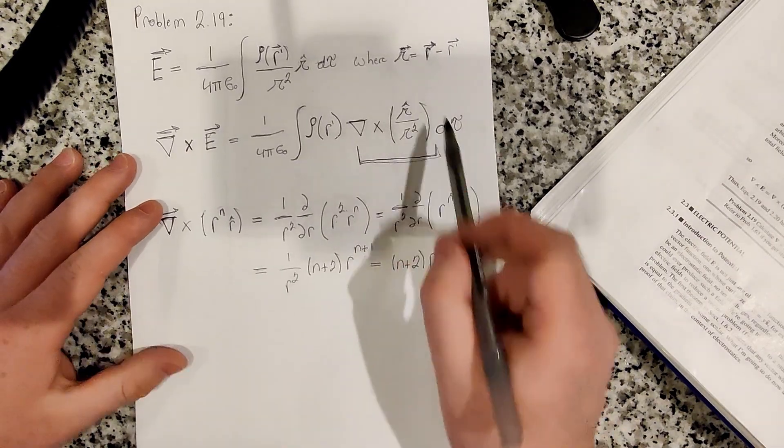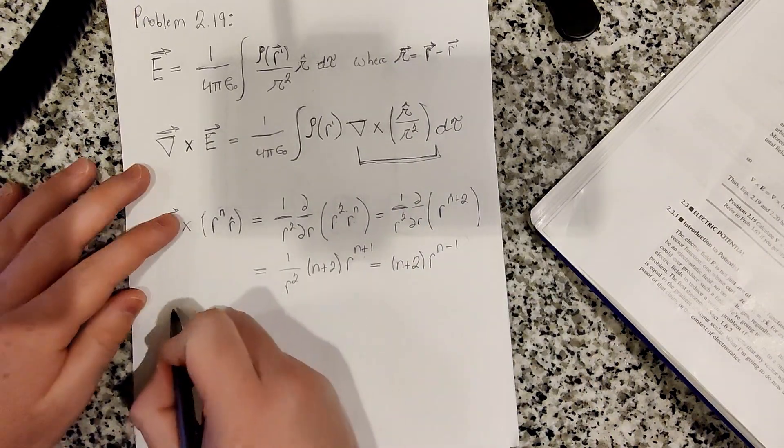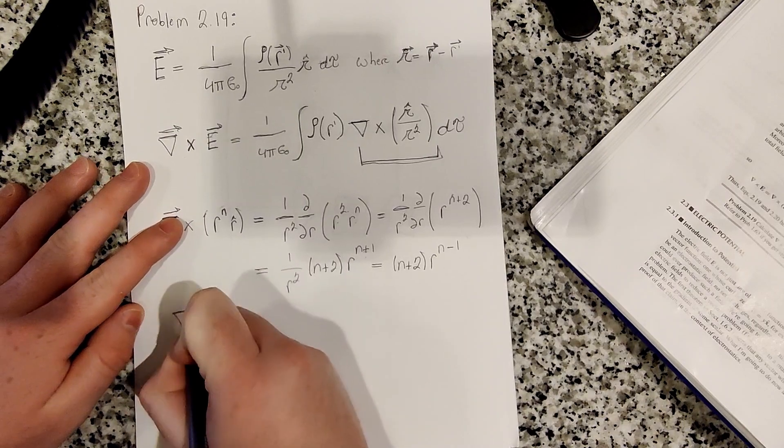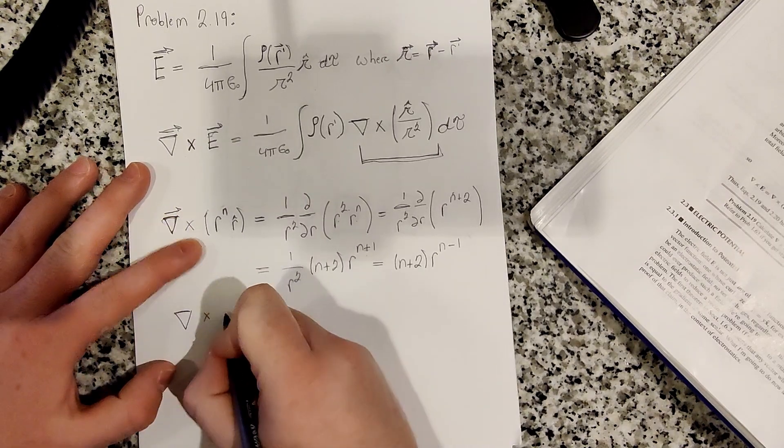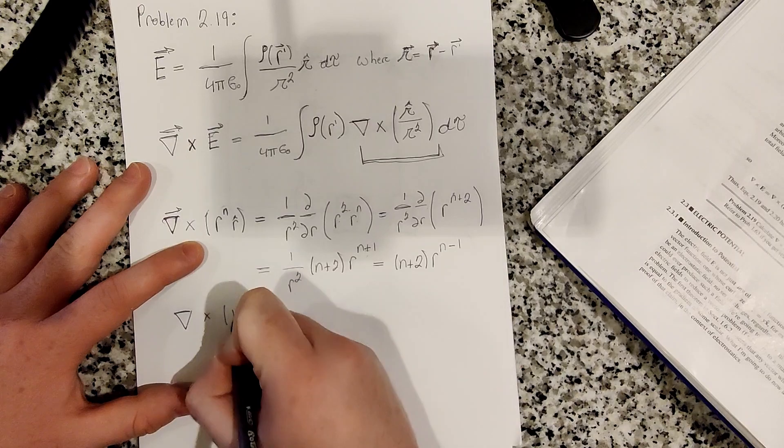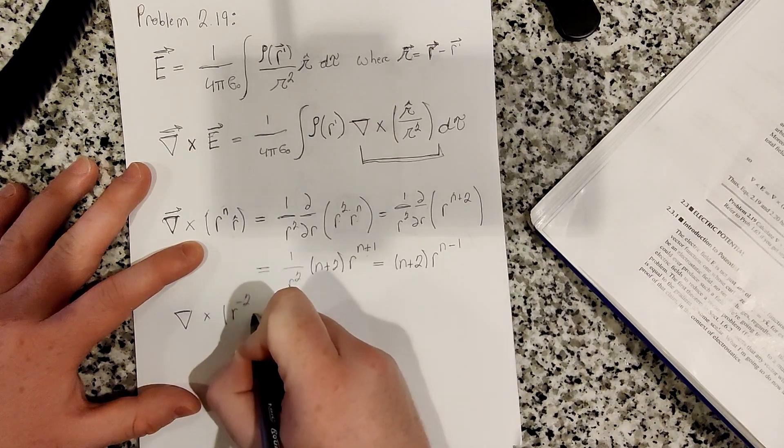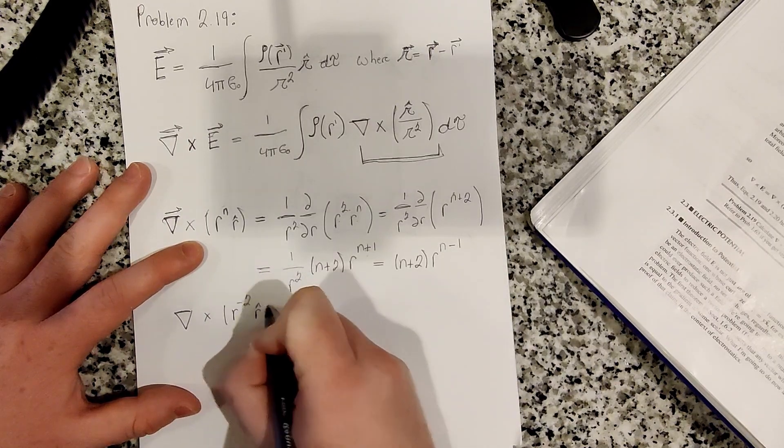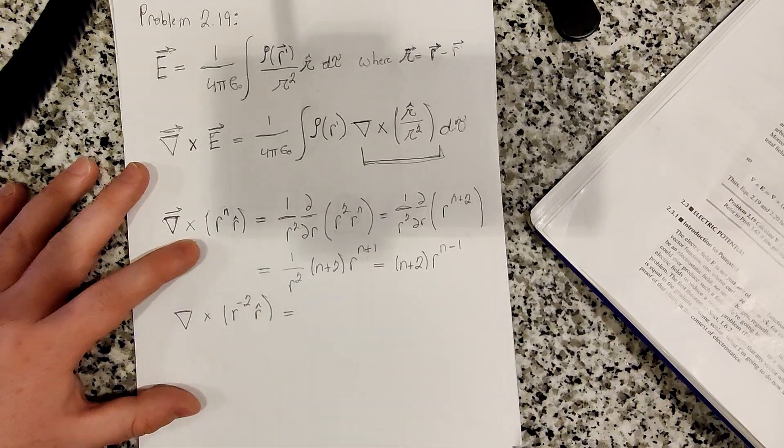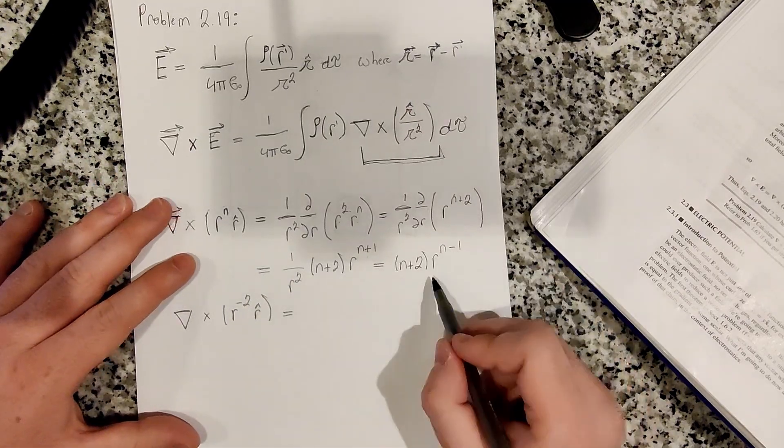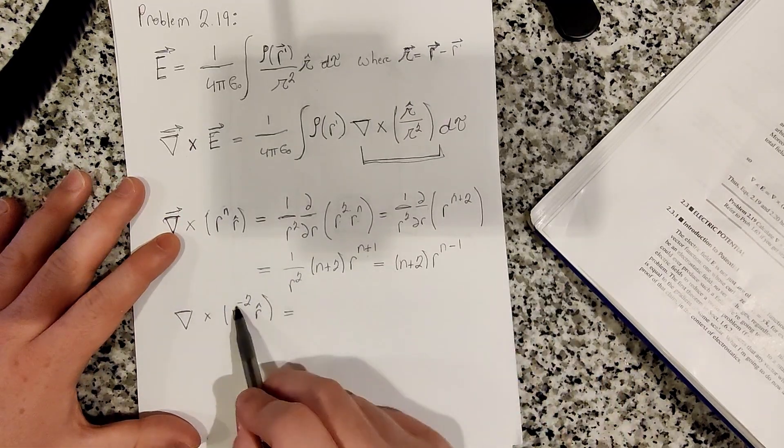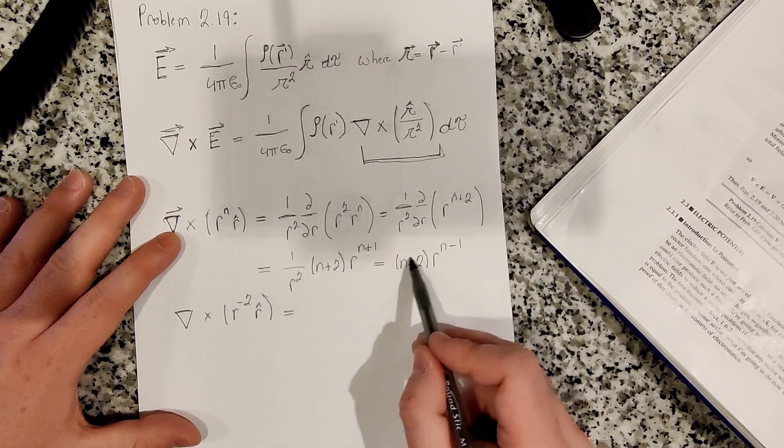So let's calculate the curl, what is the curl of r to the minus 2 r hat? Well, it's this. So n is minus 2.